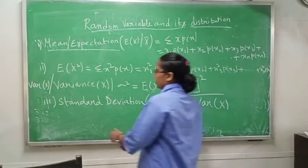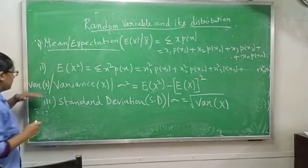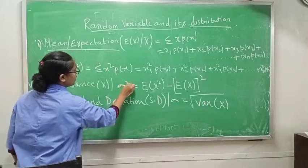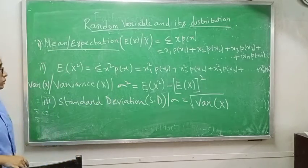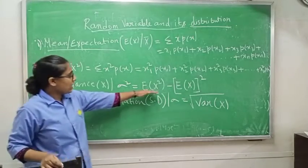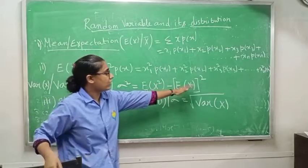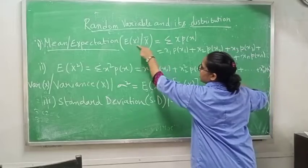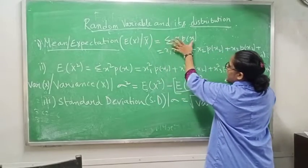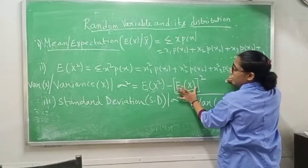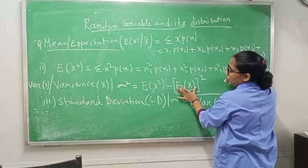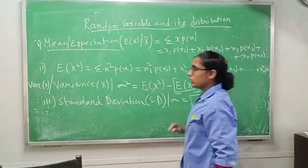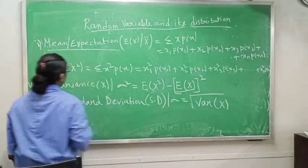For variance, it is denoted as Var(x) or σ²(x). The formula is E(x²) minus [E(x)]². E(x) is nothing but the mean, so whatever mean you get, you can substitute it here. But you still need to find E(x²) separately.